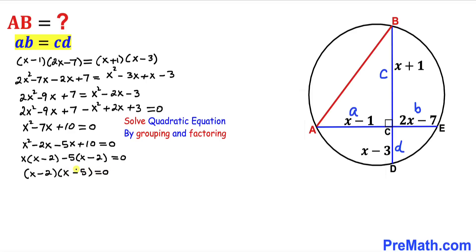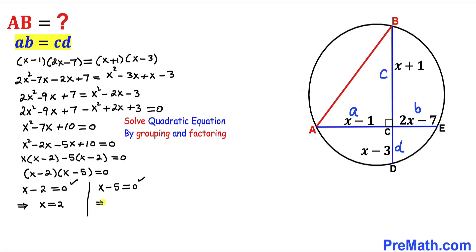Here we can see x minus 2 is in common in both groups, so we can write this as (x minus 2) times (x minus 5) equals 0. Now we have two factors equal to 0, so we separate them: x minus 2 equals 0, and x minus 5 equals 0, giving us x equals 2 and x equals 5.